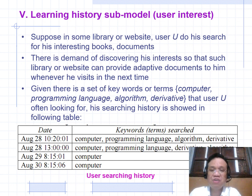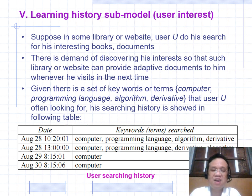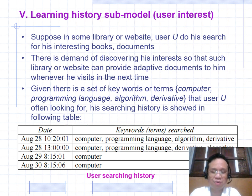Example: In a library or website, a user searches for interesting books or documents. There is demand for discovering the user's interest so the library can provide adaptive documents on future visits. Given a set of keywords the user often searches — Computer, Programming Language, Algorithm, Derivative — this is derived from the search history.